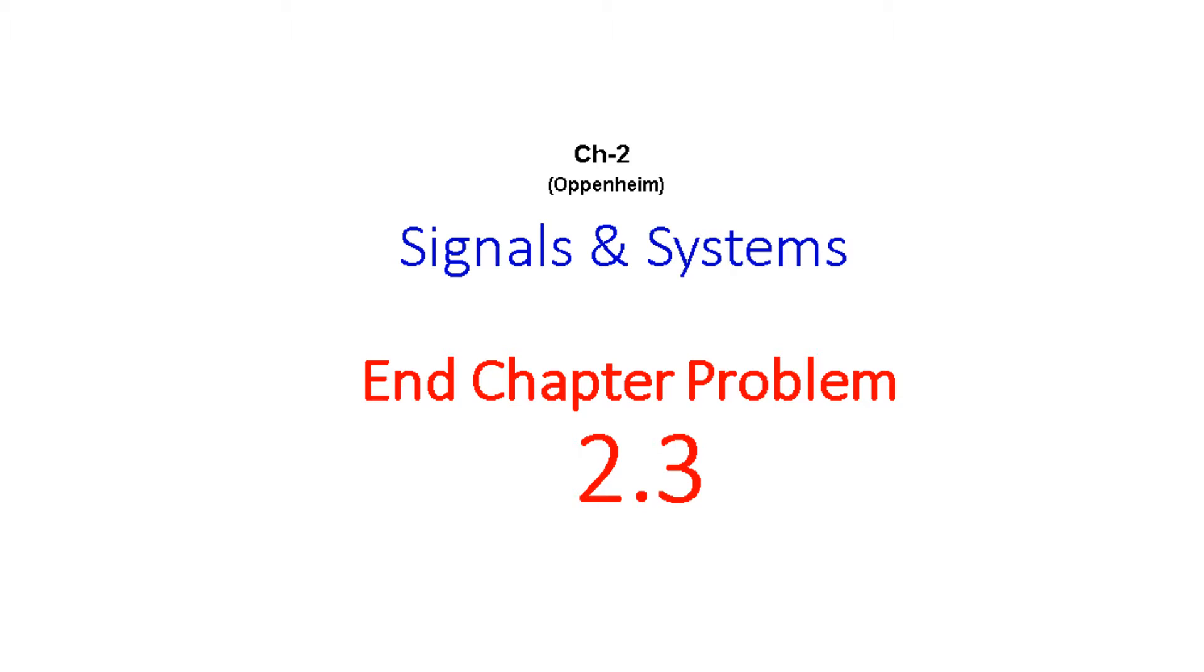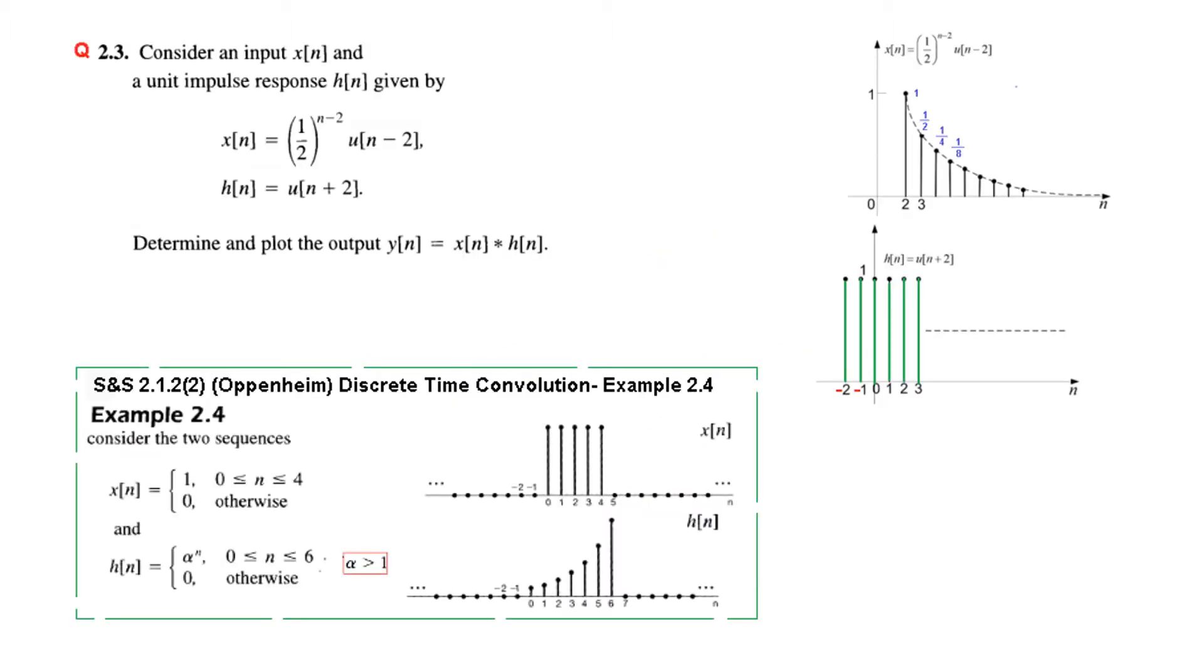In this video, we will be solving end chapter problem number 2.3 from the Signals and Systems book by Mr. Oppenheim. So let's see the question. Consider an input x[n] and a unit impulse response h[n] given by shown here.